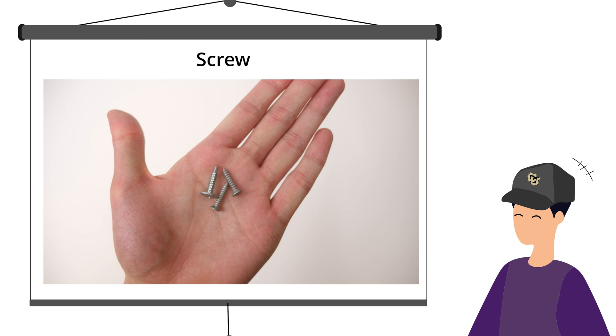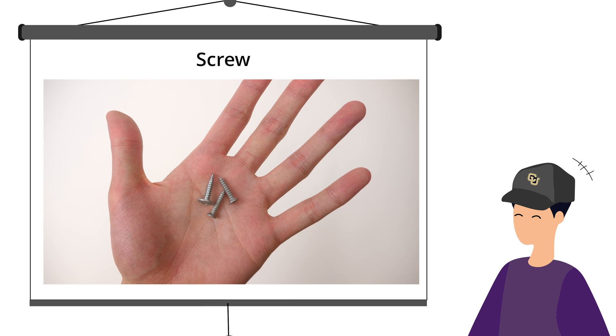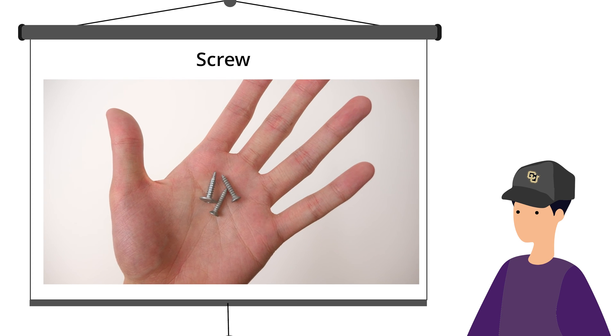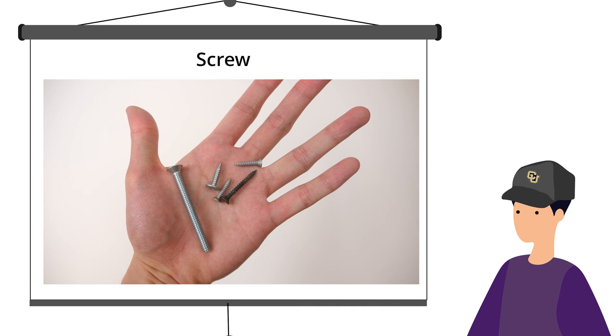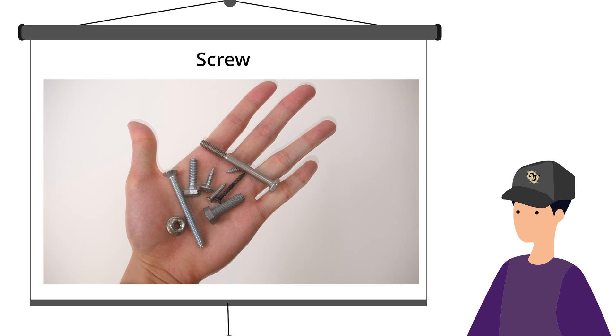Screw. A screw is an incline plane that is wrapped around a cylinder. Examples of screws include fasteners that are used to attach wood or metal, lifting screws that are used to lift heavy objects and dig holes, and bolts that are used with nuts to keep things together.